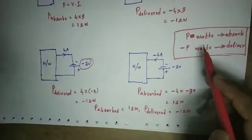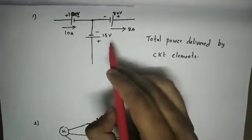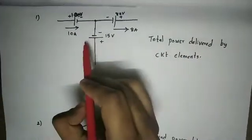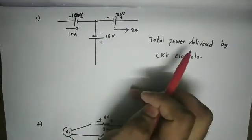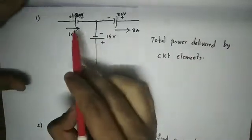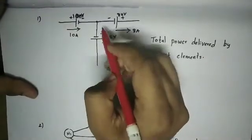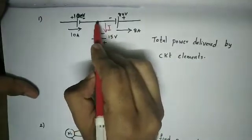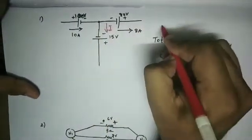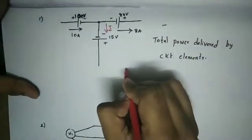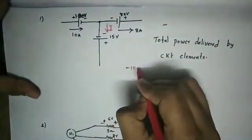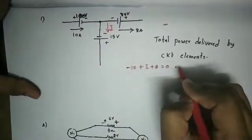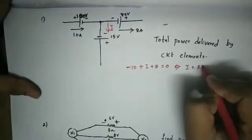This is the first gate question: find the total power delivered by the circuit elements. First of all, we need voltage into current. We need to apply KCL: minus 10 plus I plus 8 equals 0, so I is equal to 2 amps.